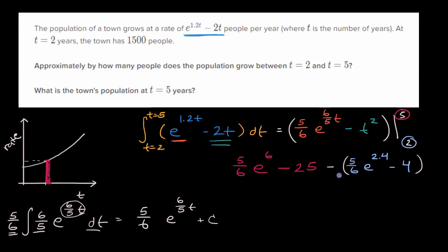And so what do we get? We could write this as five-sixths times e to the sixth minus e to the 2.4 power. And then we have minus twenty-five, and then you have minus negative four, so that would be plus four. So that would be minus twenty-one.